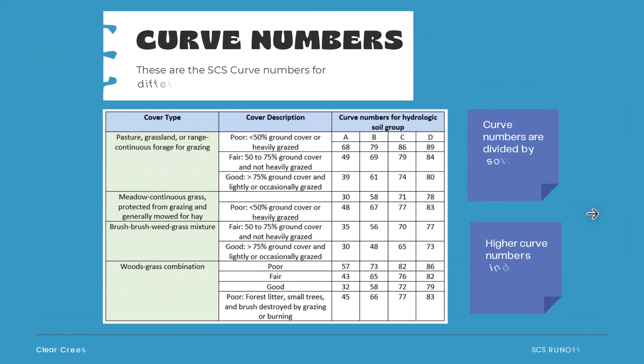Let's cover curve numbers before the sample problems. These are the curve numbers for different land use types — you can see the cover type, description, and the curve numbers for hydrologic soil groups A, B, C, and D. Curve numbers are divided by soil group and land use types, and higher curve numbers indicate more runoff. For example, a pasture with poor ground cover — less than 50% or heavily grazed — on type A soil has a curve number of 68, while a wood-grass combination of good type A soil has a curve number of only 32. So that poor soil would generate more runoff than the good wood soil.